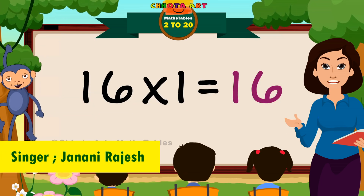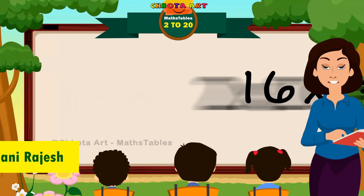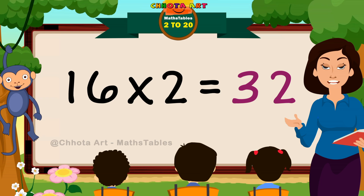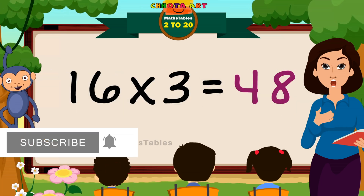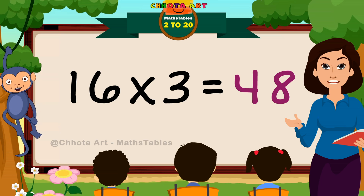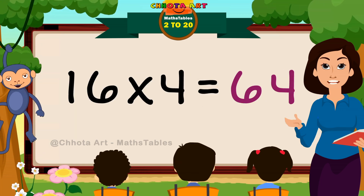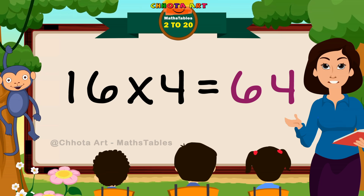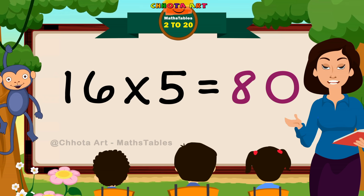16 ones are 16. 16 twos are 32. 16 threes are 48. 16 fours are 64. 16 fives are 80.